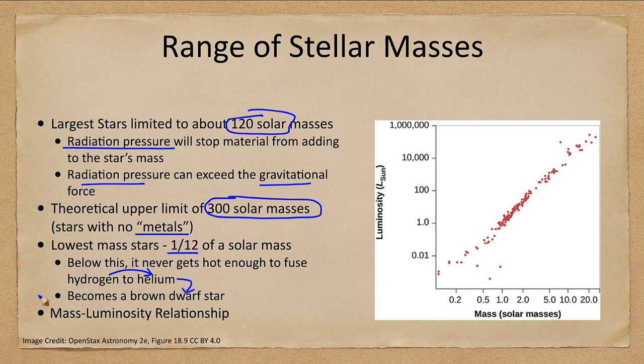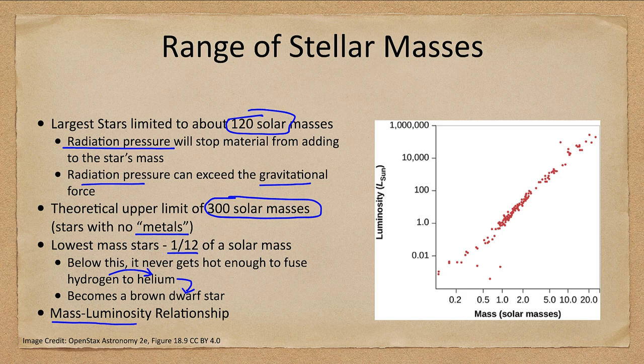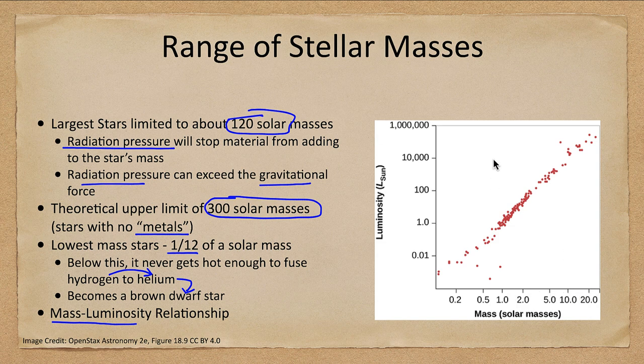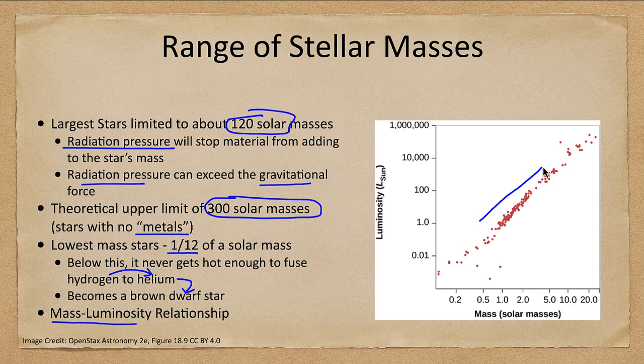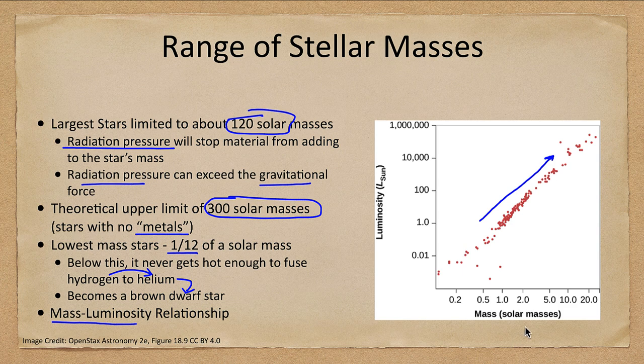Now we also find what we call the mass luminosity relationship as shown here, that there is a relationship between the mass and luminosity. As you get larger and larger masses we get larger and larger luminosities and it actually goes up as a relatively high power. So a star that is twice as massive will not be twice as luminous but will be many times more luminous.